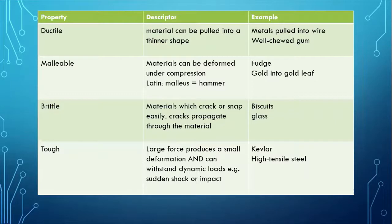A brittle material. Brittle materials are those which crack or snap easily. What's involved with this cracking or snapping? Well, cracks propagate really very quickly through the material. Glass is the classic example. And some biscuits are really quite brittle. Rich tea biscuits, one of my favourites.